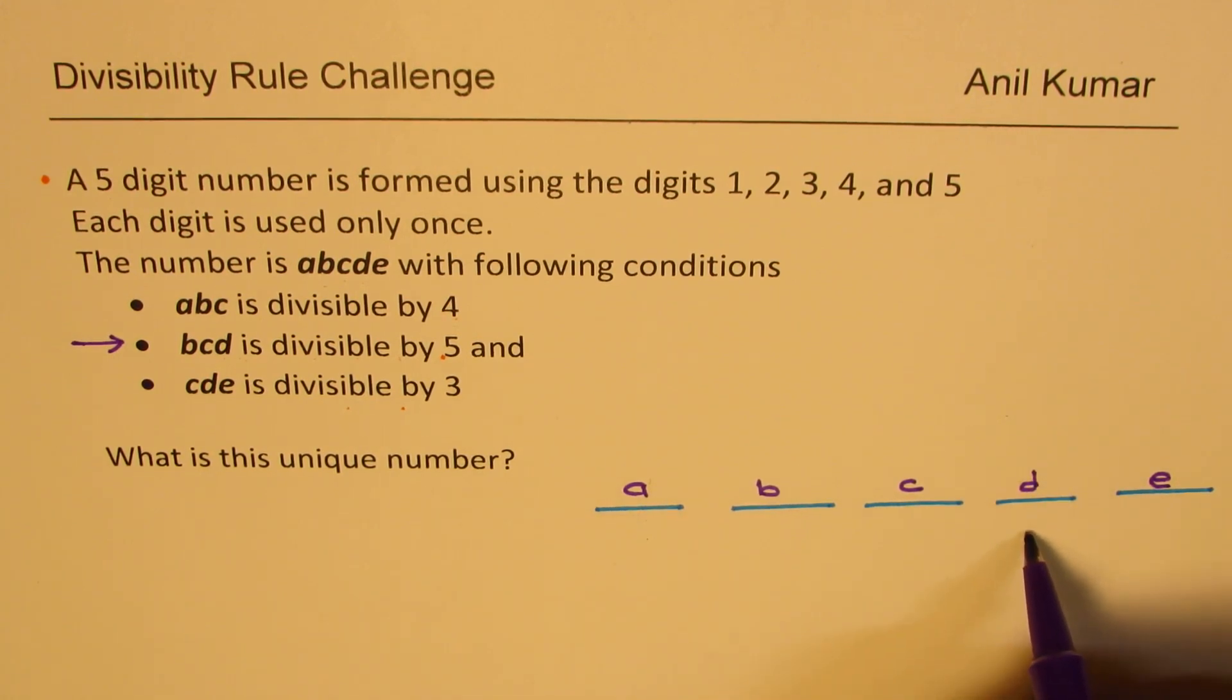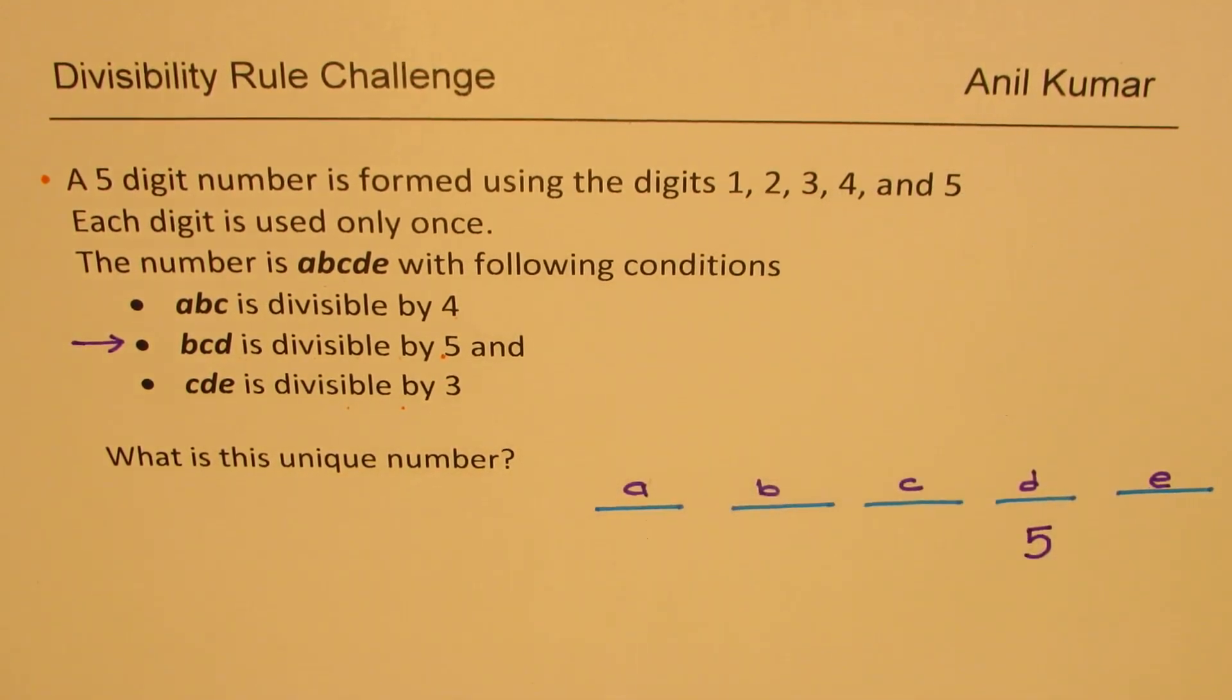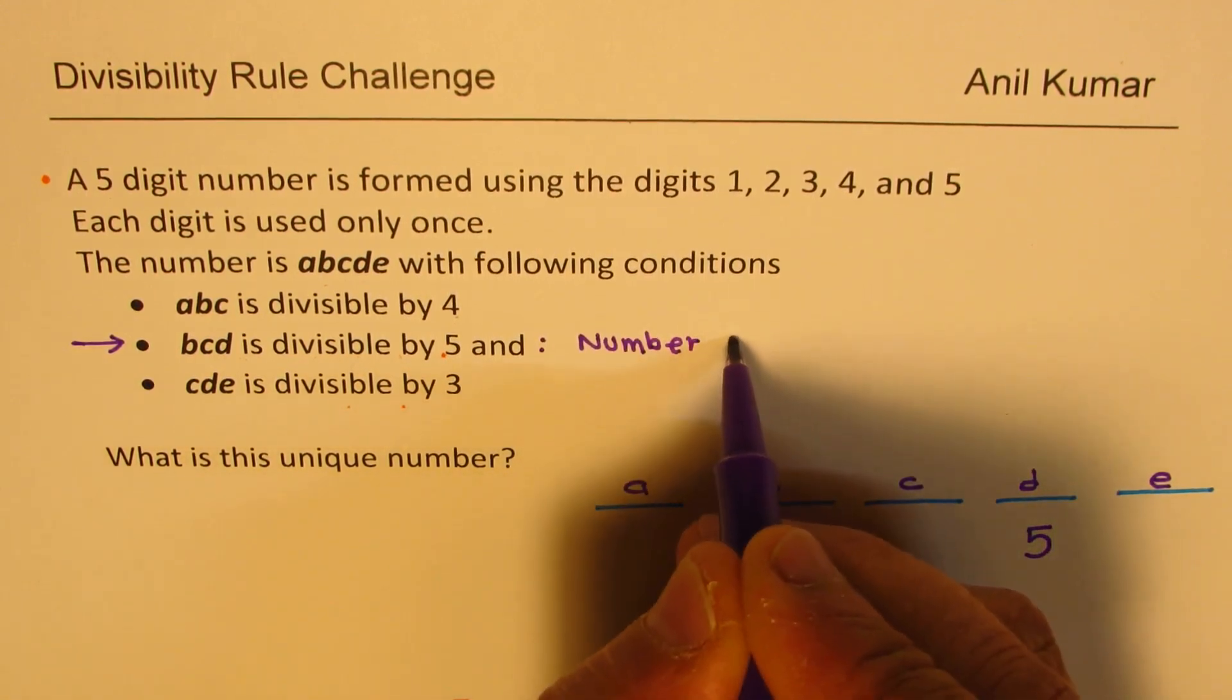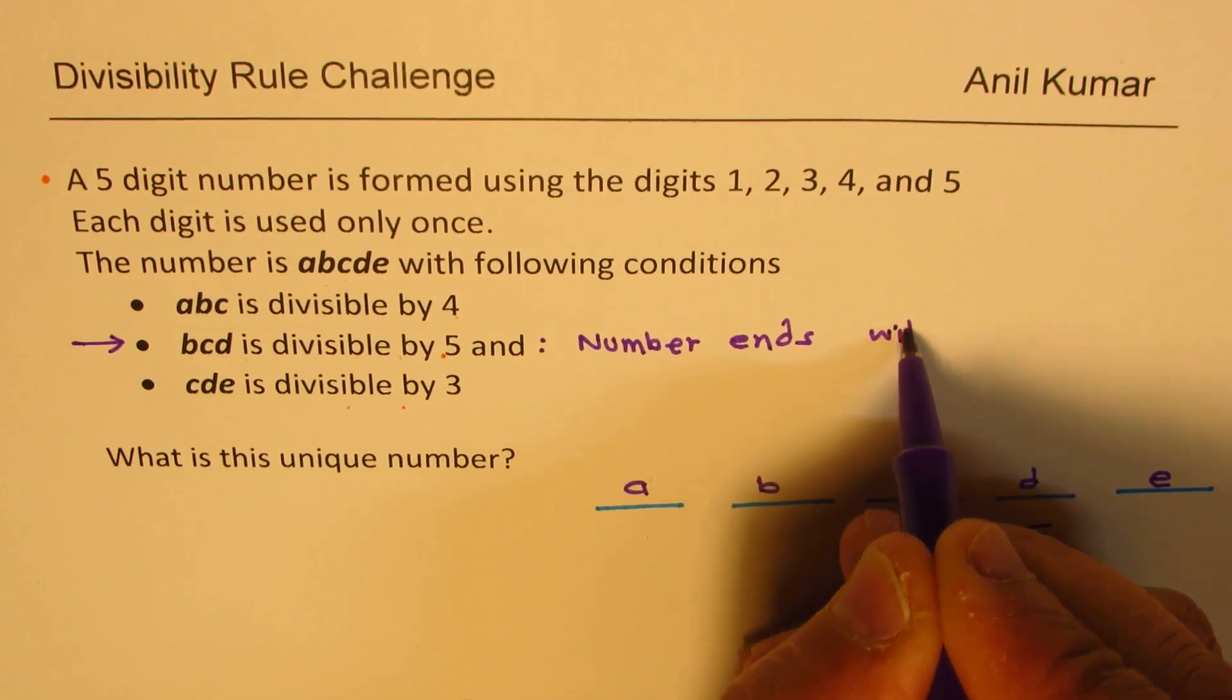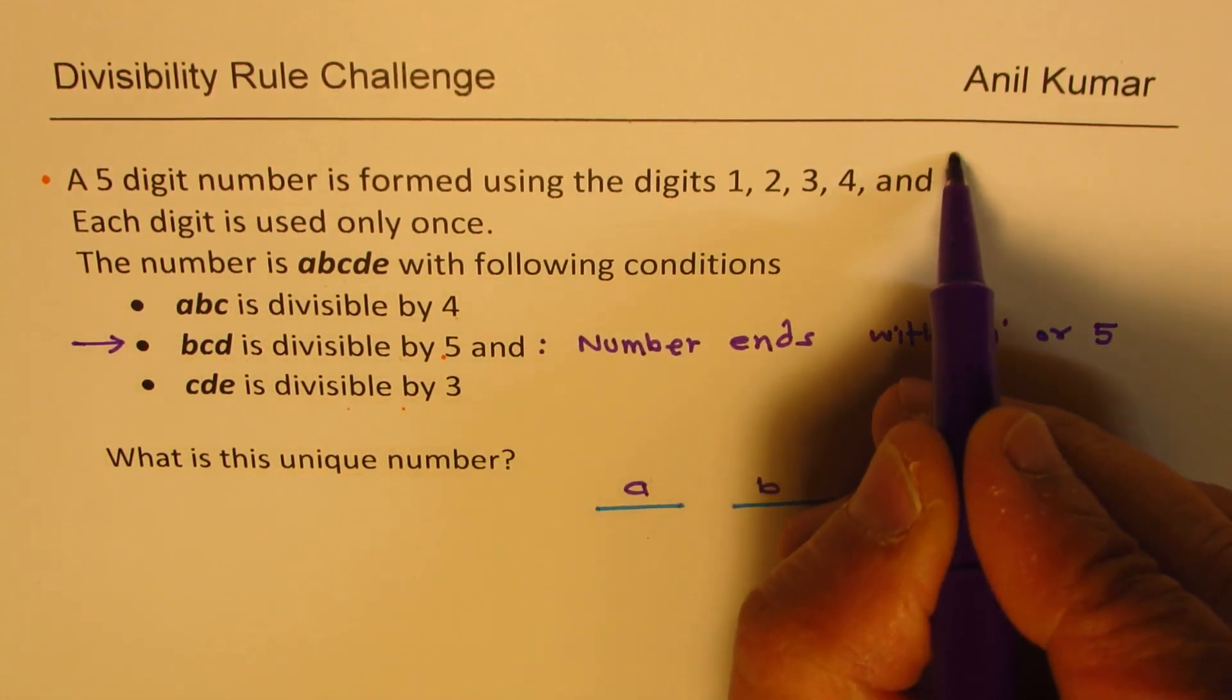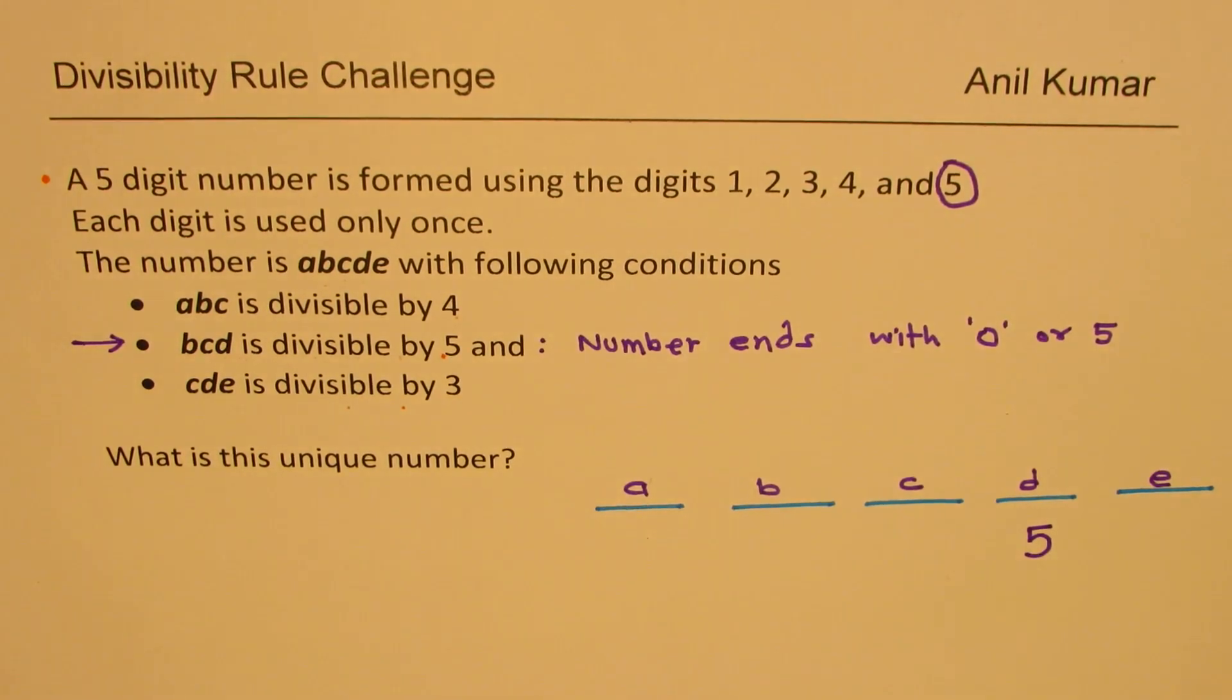Since our number has 1, 2, 3, 4, 5, there is no 0 in it. The rule here is number ends with 0 or 5. Since we have only 5 here, we have used the number 5 and that goes in the position of D.